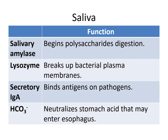Here's a handy table showing the minor components of saliva and their functions. Salivary amylase begins polysaccharide digestion — even in your mouth, polysaccharides begin being chemically digested. For example, if you eat a cracker very slowly, you might feel it start tasting sweeter. Lysozyme breaks up bacterial plasma membranes, helping clean the oral cavity. IgA provides antigen and pathogen defense, so it has an immune function. Bicarbonate is a buffer — it will neutralize stomach acid that may enter the esophagus.